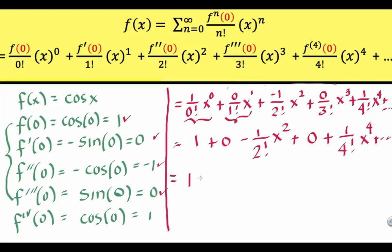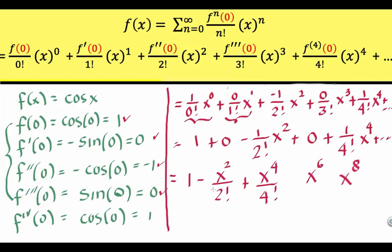Removing all the zero terms, we now have 1 minus x squared over 2 factorial plus x to the 4th over 4 factorial, and so on. If we keep expanding this, the pattern is clear: you have x squared, x to the 4th, x to the 6th, x to the 8th, and the denominator always carries the same exponent with the factorial sign — so 6 factorial, 8 factorial, and so on. The sign alternates: minus, plus, minus, plus, continuing the pattern.